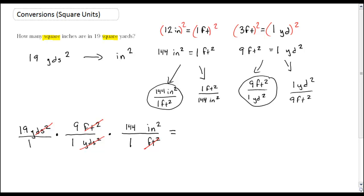So now multiply your fractions. Now it's multiplication, so multiply across the top. 19 times 9 times 144. What's the label on top? Inches squared over 1 times 1 times 1. That's just 1. And I have no label on the bottom. So my final answer will just be in inches squared, which is what I want. So 19 times 9 times 144, 24,624 inches squared.